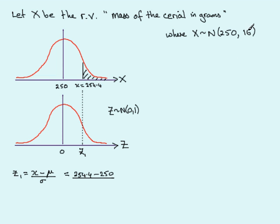Remember, the variance is 16, so we need the square root of 16, which you can either write in as the root of 16 or we know that that's 4. Working this out: 254.4 take away 250 is 4.4, and divide that by square root of 16, which is 4, gives a value of 1.1.